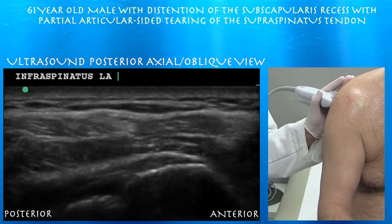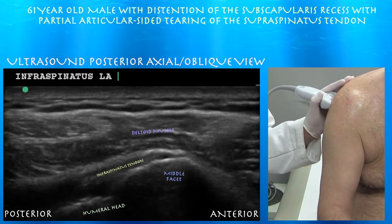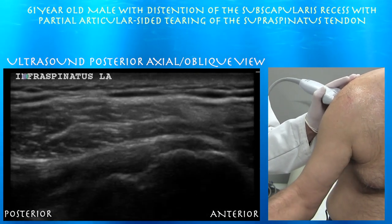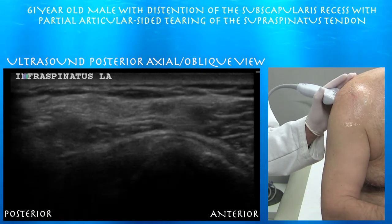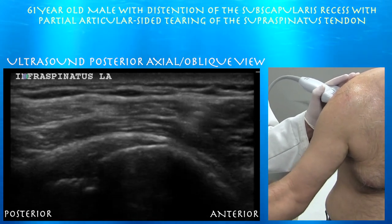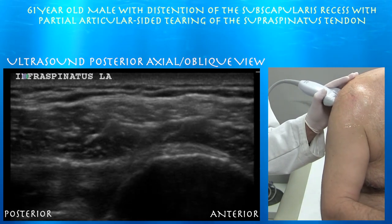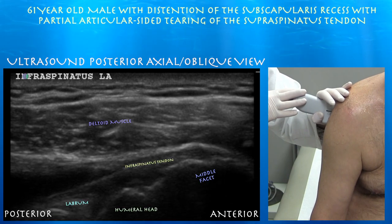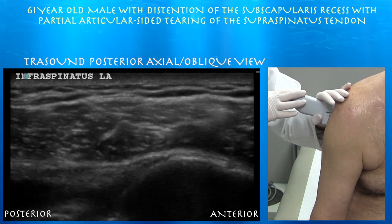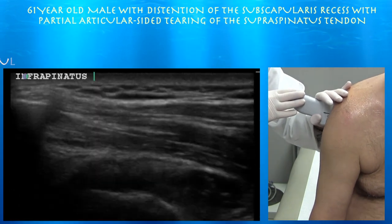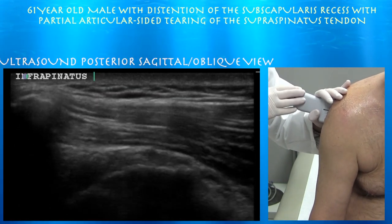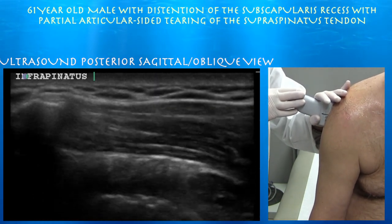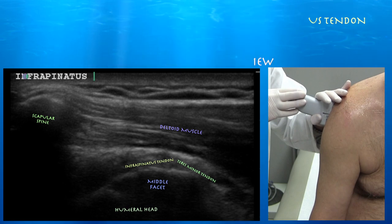Here's the infraspinatus tendon in long axis — you can see it attaching on the middle facet. It's always good to have the patient internally and externally rotate; you can see different parts of the infraspinatus tendon come into view during this, and you can also catch a view of the labrum. Here's a good view of the labrum abutting the humeral head. You can see the infraspinatus tendon attaching to the middle facet of the greater tuberosity. In short axis, the scapular spine on the left side of the screen means the infraspinatus is to the left and the teres minor to the right.